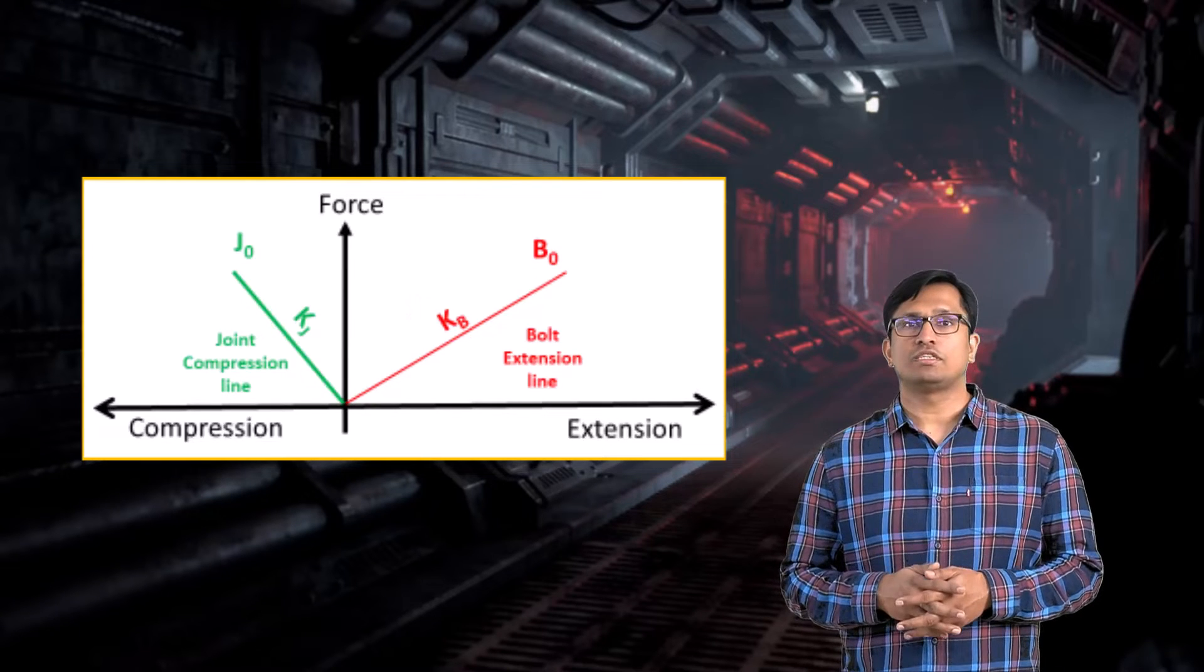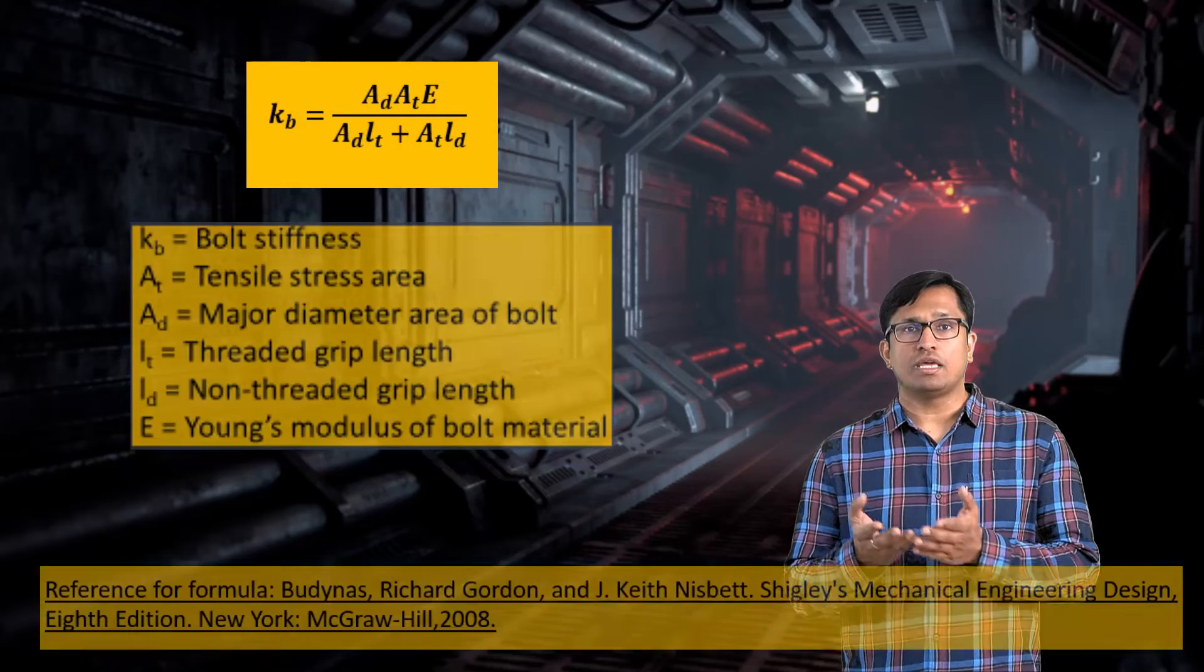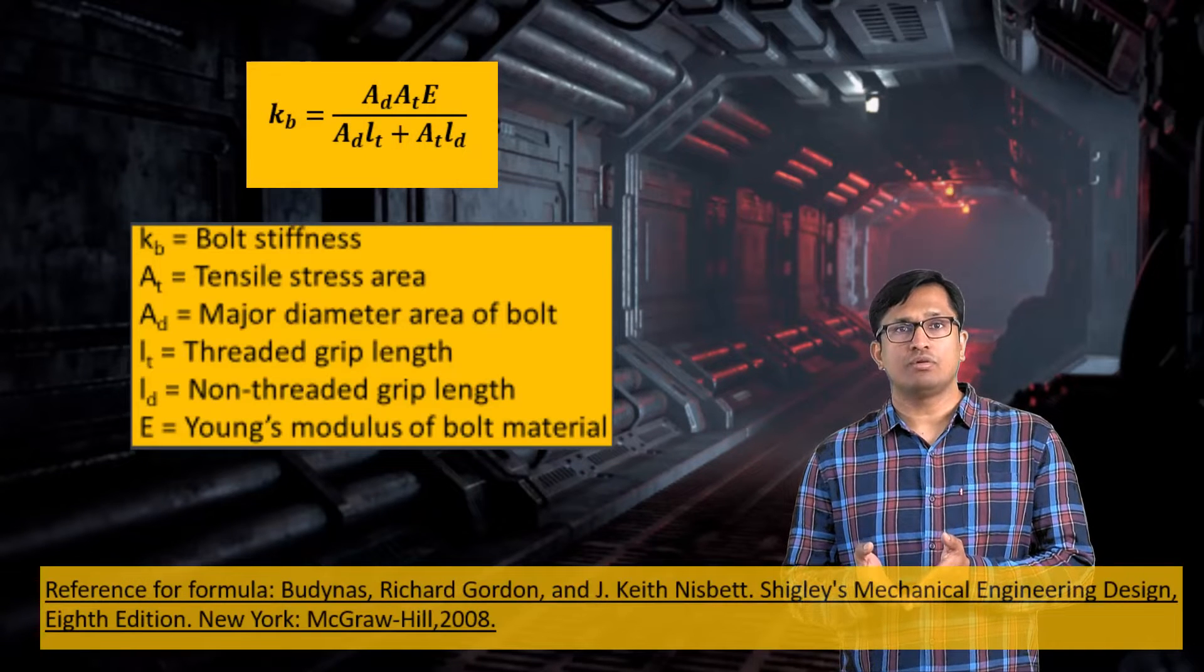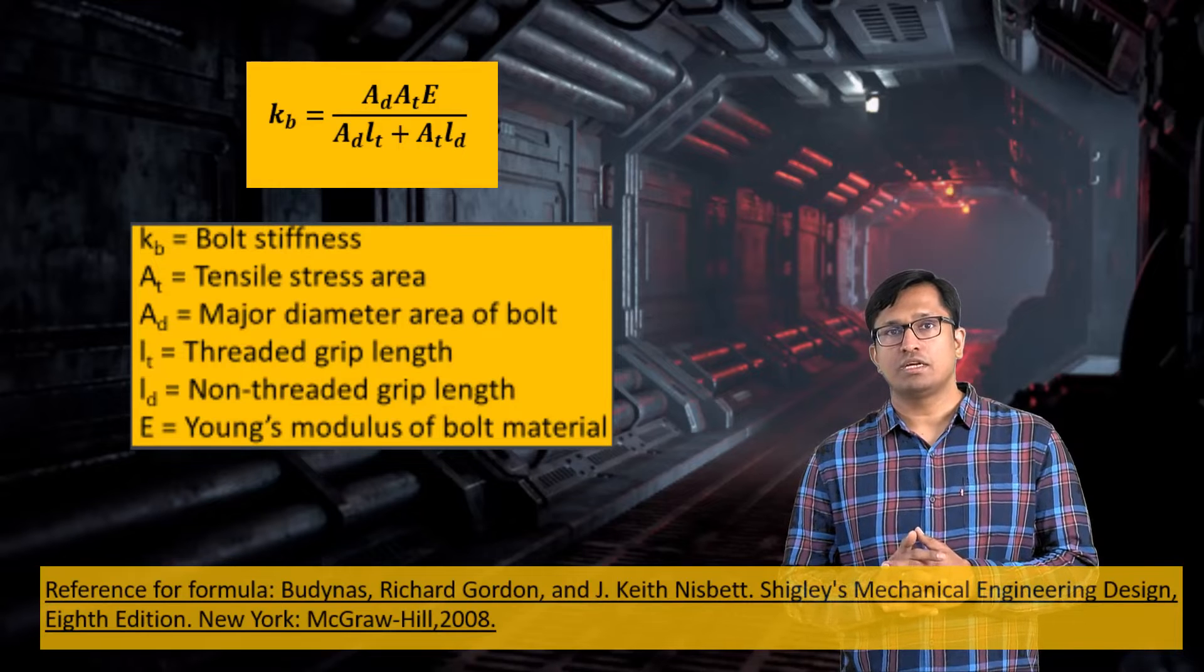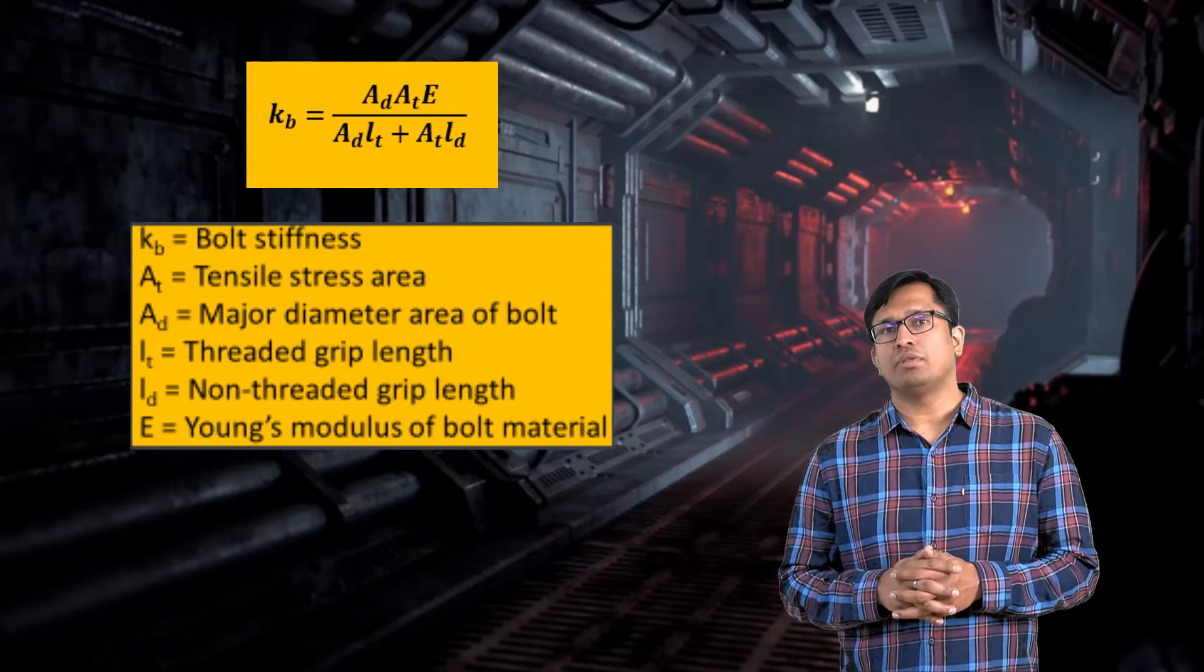The approximate bolt stiffness can be calculated using this formula where A is the tensile stress area of the bolt, E is the Young's modulus of the bolt material, and L is the grip length.